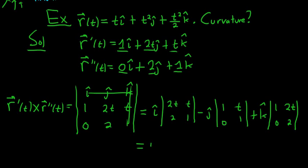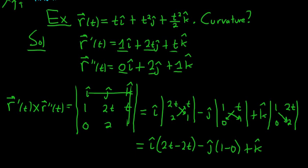Alright, so this is equal to i, so it's 2t times 1, which is just 2t, minus 2t. Oh, that's nice. That's going to be 0. It's really good. Minus j, so 1 times 1 is 1, minus t times 0, which is 0. Again, pretty nice. Plus k, 2 times 1 is 2, minus 2t times 0 is 0. So we end up with 0i - j + 2k. So that is the cross product.